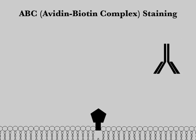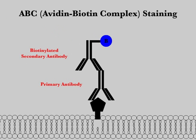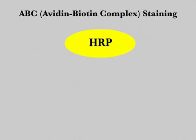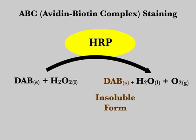Avidin-biotin complex staining begins with the binding of the primary antibody to the target antigen. A secondary antibody, conjugated with biotin, binds to the primary antibody. Avidin protein can bind to the biotinylated antibody. A peroxidase, conjugated to biotin, can then bind to a free space on the avidin molecule. Horseradish peroxidase catalyzes the reaction between DAB and hydrogen peroxide. The product of this reaction is a brown DAB precipitate, water, and oxygen gas.